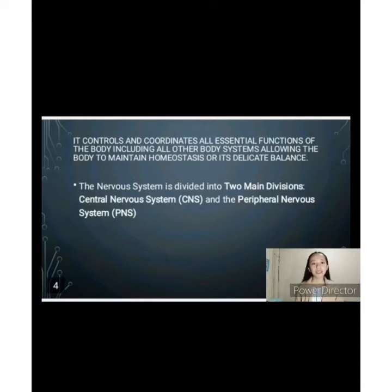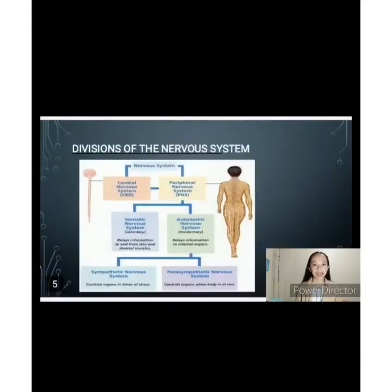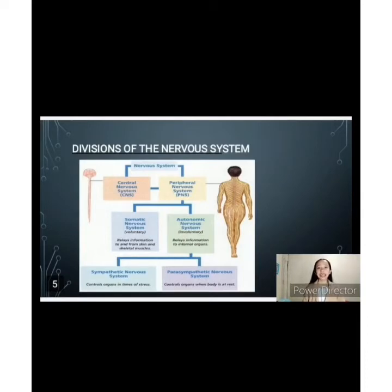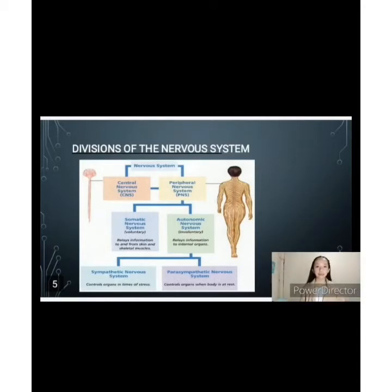The nervous system is divided into two main divisions: the central nervous system or CNS, and the peripheral nervous system or PNS. The central nervous system is made up of your brain and spinal cord. Your brain uses your nerves to send messages to the rest of your body. Each nerve has a protective outer layer called myelin. Myelin insulates the nerve and helps the message get through.